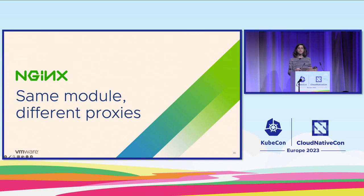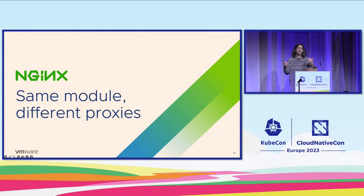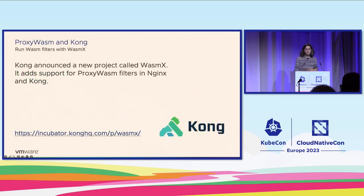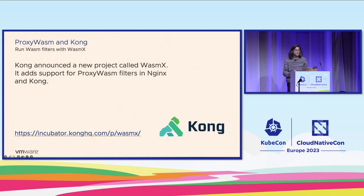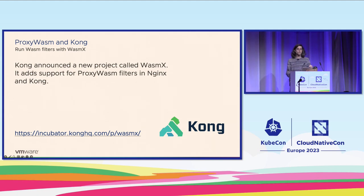Since we were already experimenting with this, we quickly contacted them and started talking. They got excited about having different languages for filtering, and mentioned that this is something customers had already asked them — whether they could use languages other than the ones mentioned. Kong announced a new project called Wasm-X that adds proxy WASM filters in Nginx for extension in the Kong platform. The great thing is that once we had, for example, the JavaScript filter as a WebAssembly module, we only had to send that module to them. We didn't need to recompile, think about architecture, or anything else. The same exact module works in Kong, in Envoy, and in anything that implements the Proxy Wasm interface.